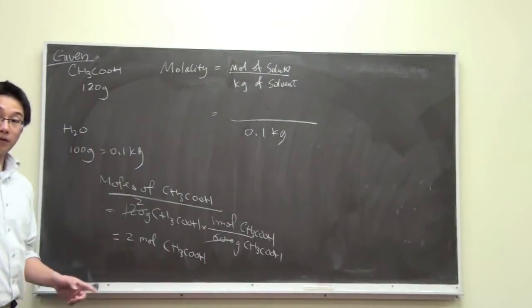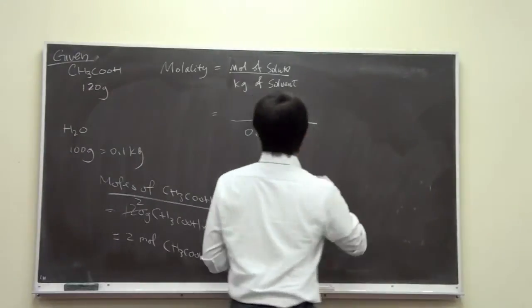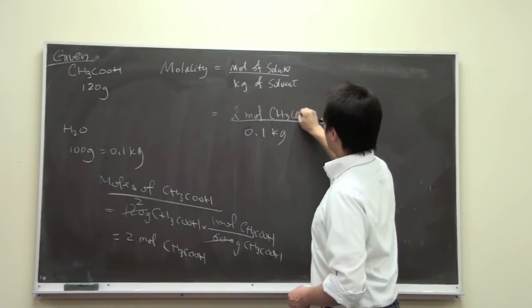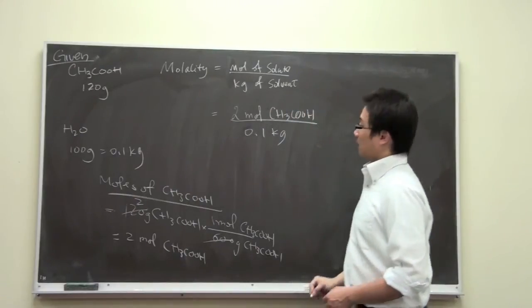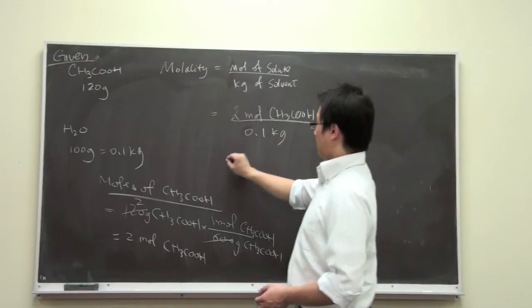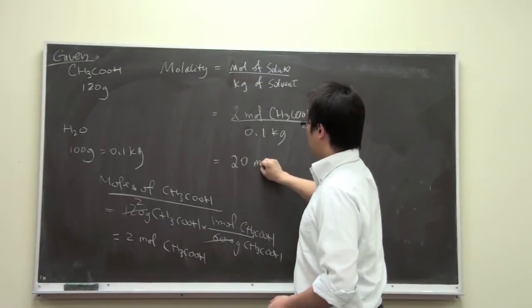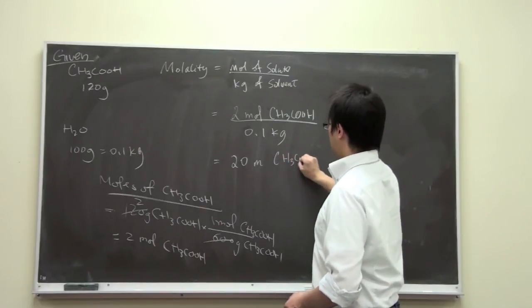We are going to put this number into the numerator here. Simply divide by 0.1, and you would get 20 molal of acetic acid.